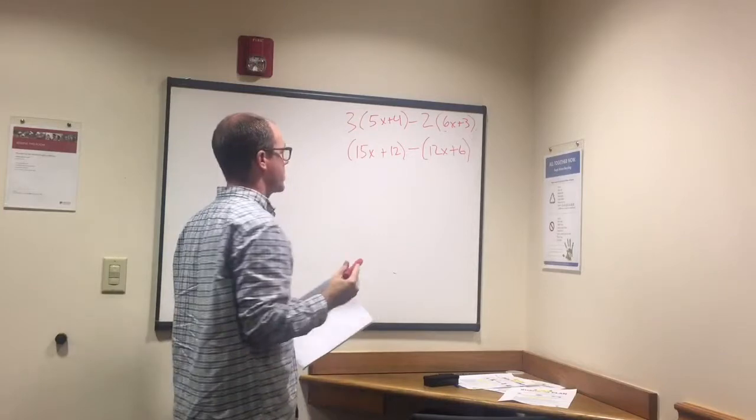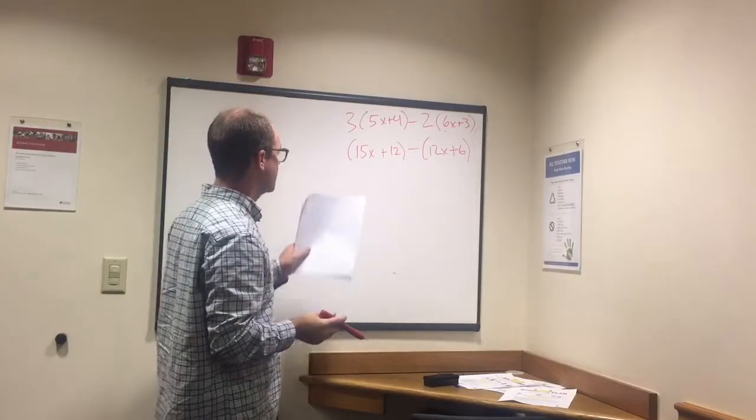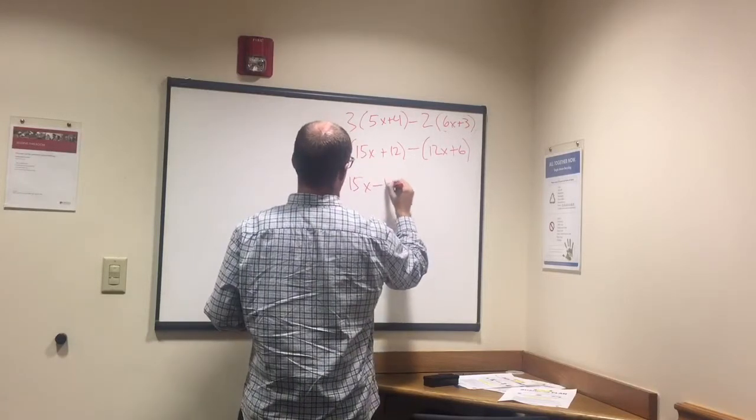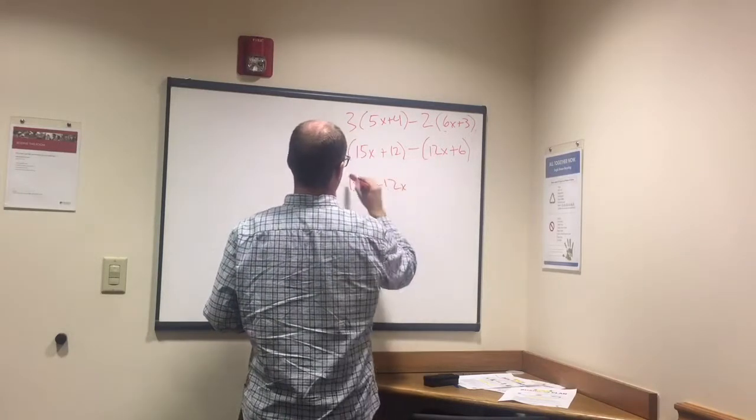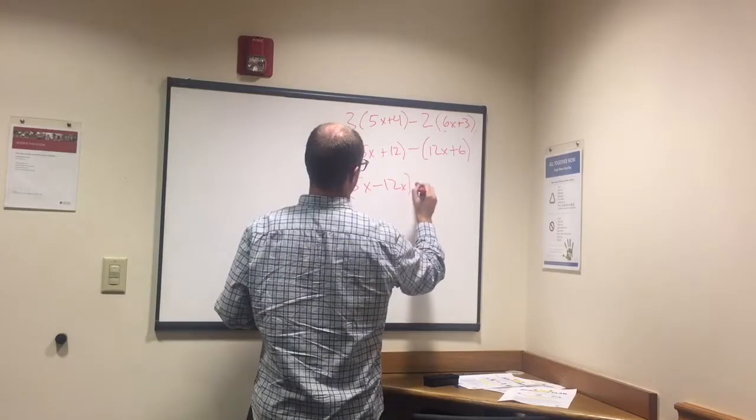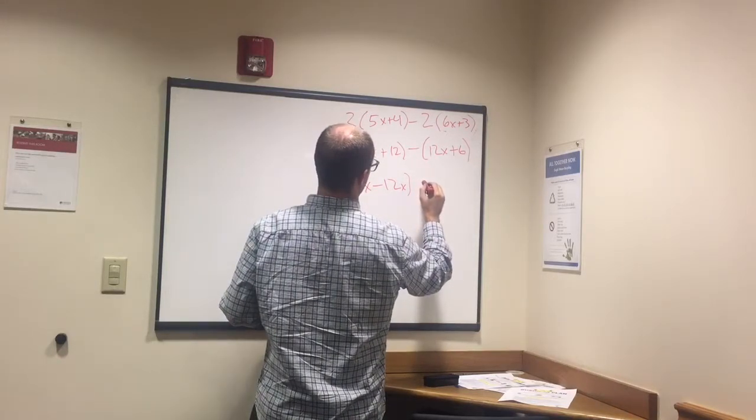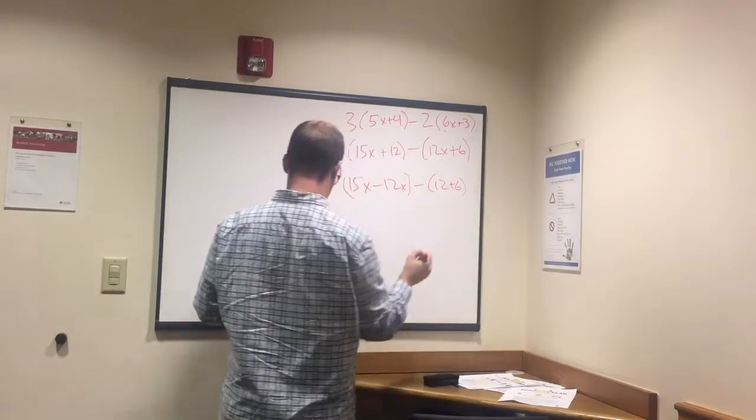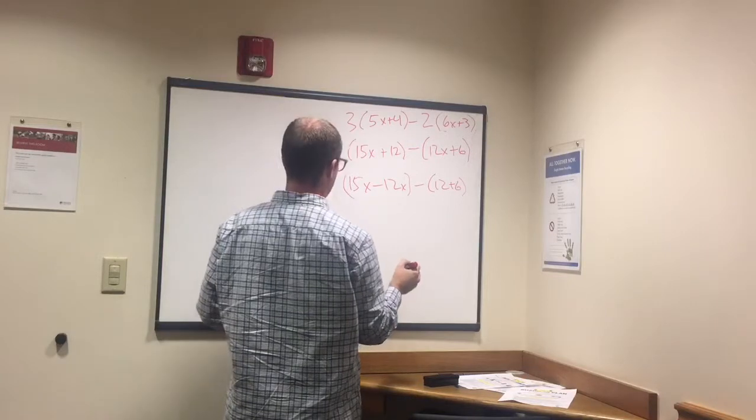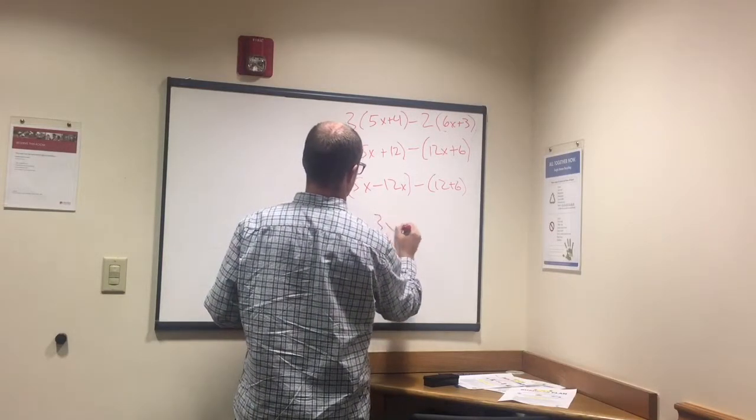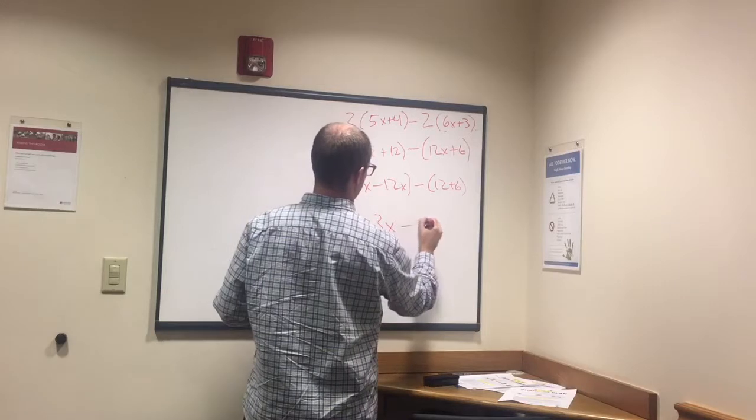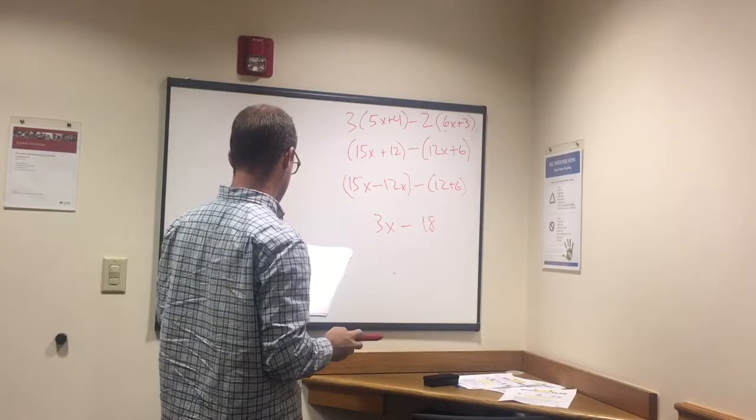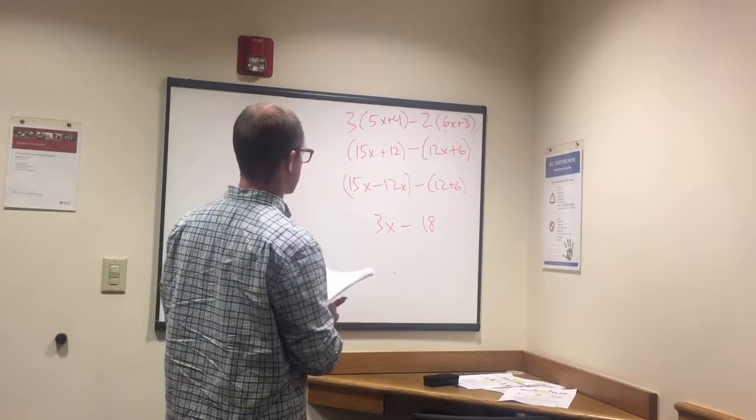Now we're going to subtract like terms. So we have 15x minus 12x, that one minus that one, and 12 plus 6 is 18. So 15x minus 12x is 3x, minus 12 plus 6 is 18. Looks good.